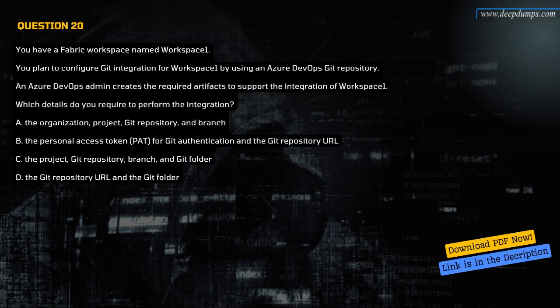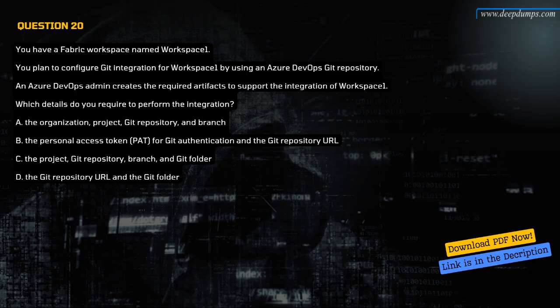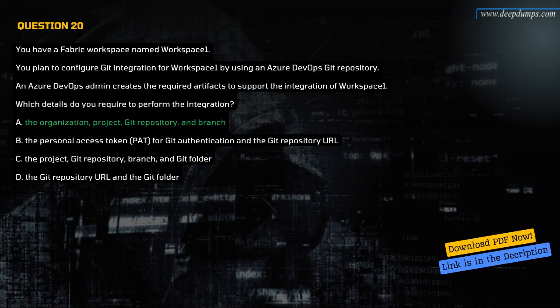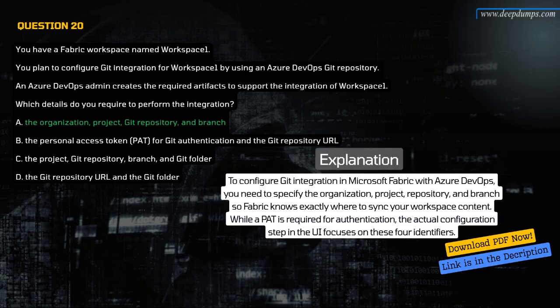Question 20. You have a Fabric workspace named Workspace 1. You plan to configure Git integration for Workspace 1 by using an Azure DevOps Git repository. An Azure DevOps admin creates the required artifacts to support the integration. Which details do you require to perform the integration? A. The organization, project, Git repository, and branch. B. The personal access token (PAT) for Git authentication and the Git repository URL. C. The project, Git repository, branch, and Git folder. D. The Git repository URL and the Git folder. The correct answer is A. The organization, project, Git repository, and branch. These four identifiers are required for Git integration in Microsoft Fabric with Azure DevOps.